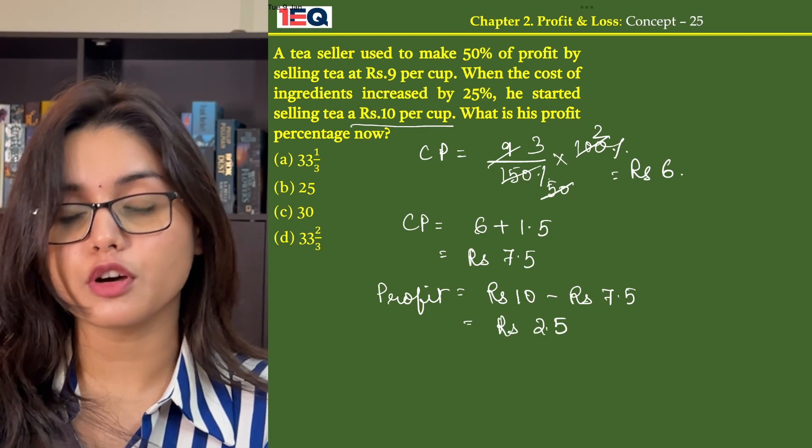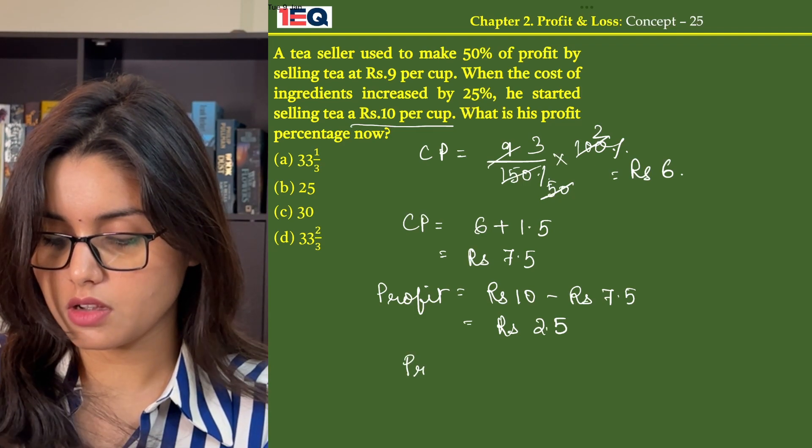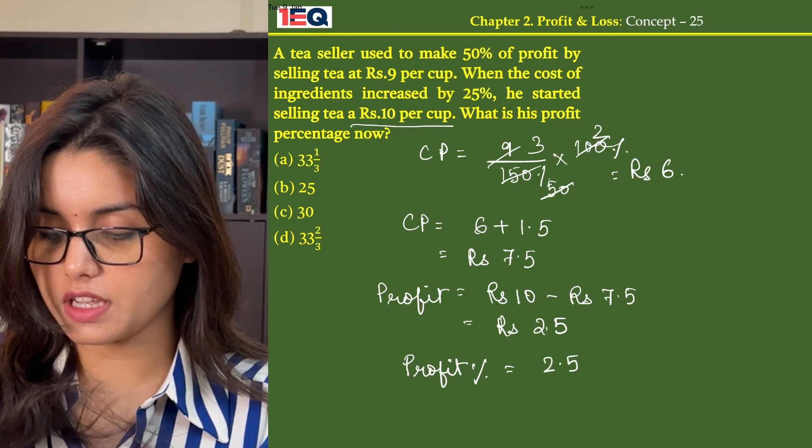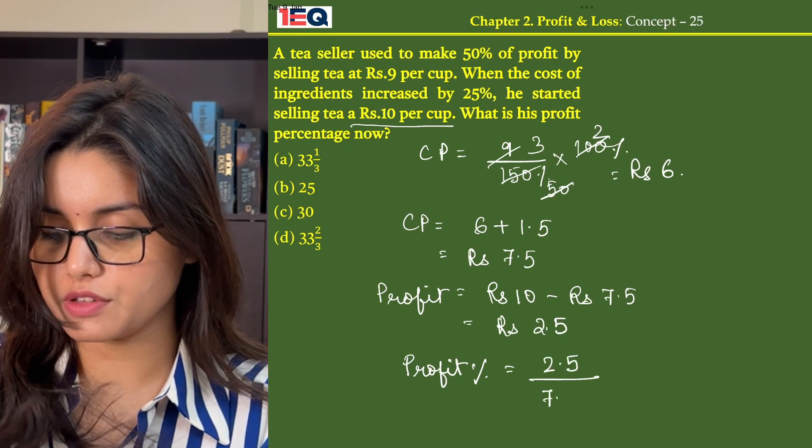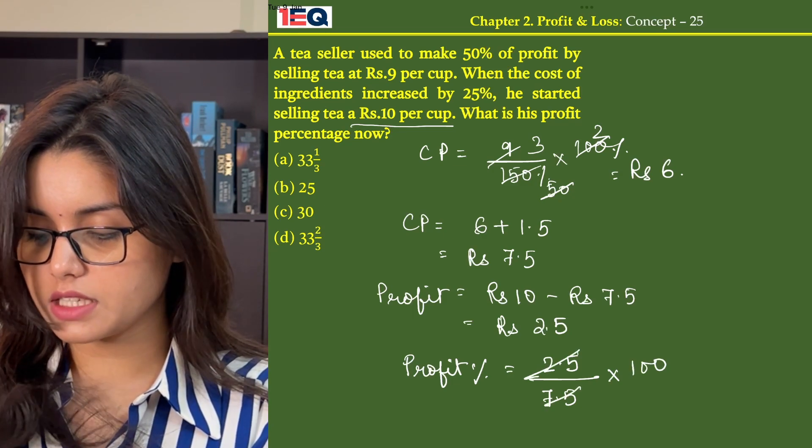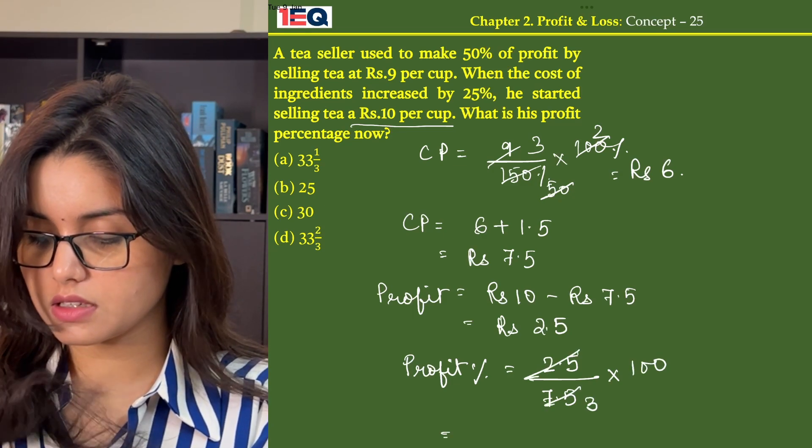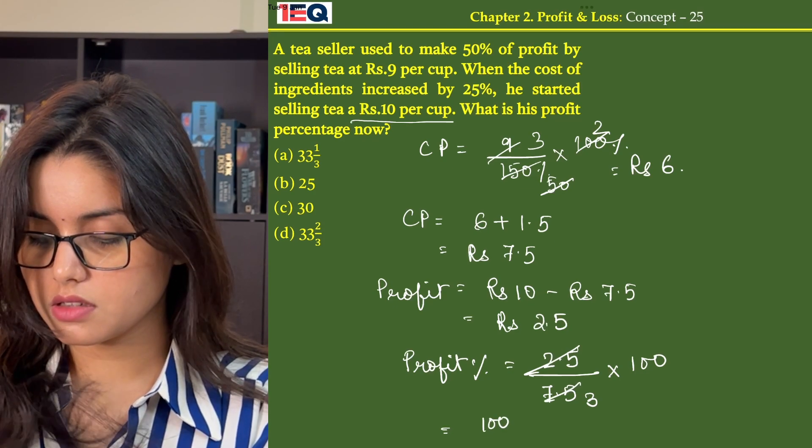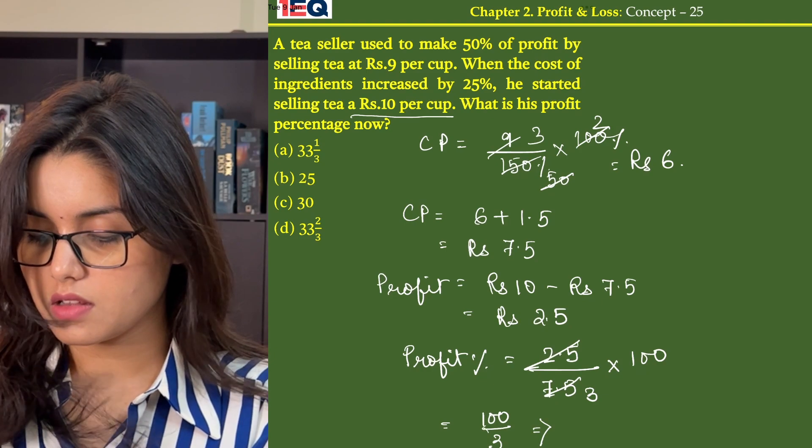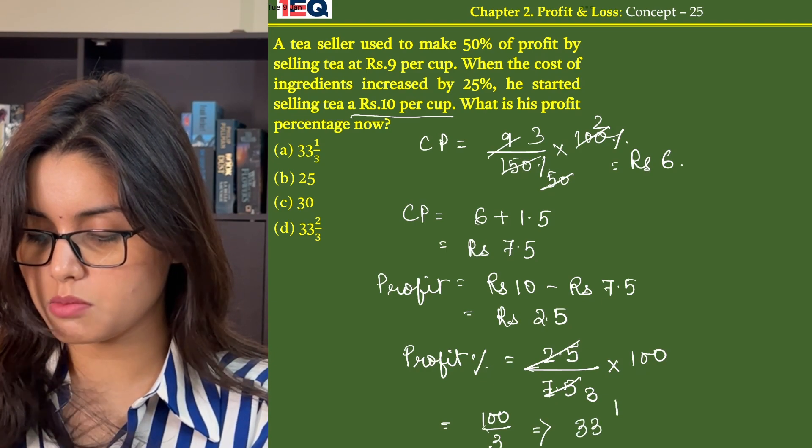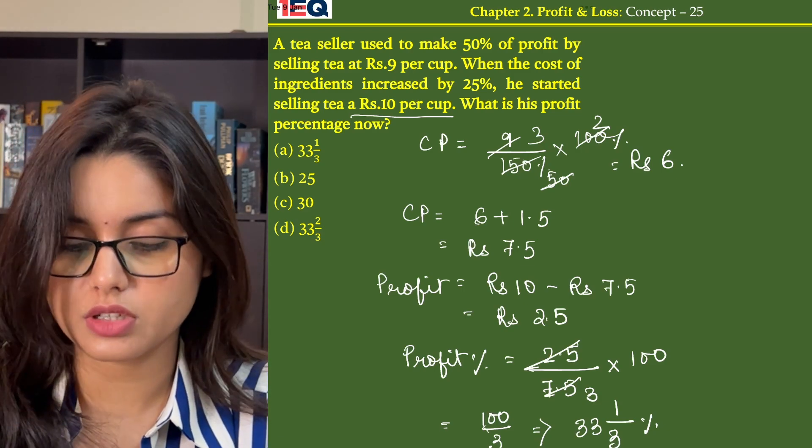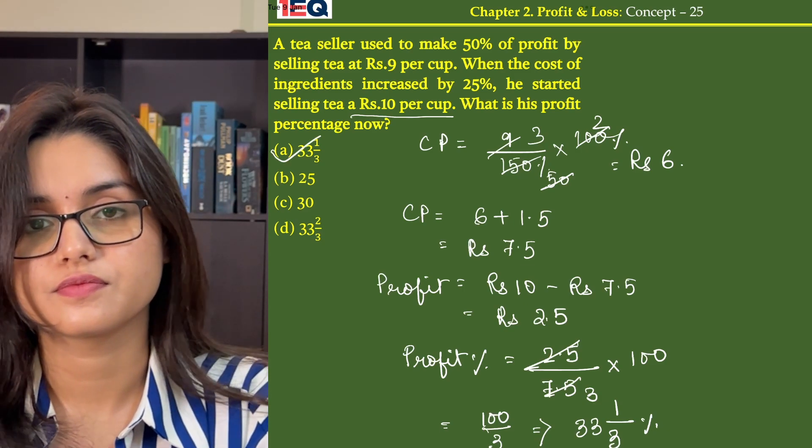The profit percentage is 2.5 by 7.5 into 100. On dividing, we get 100 by 3, which gives us 33 and 1/3%. So our answer to the question is option A.